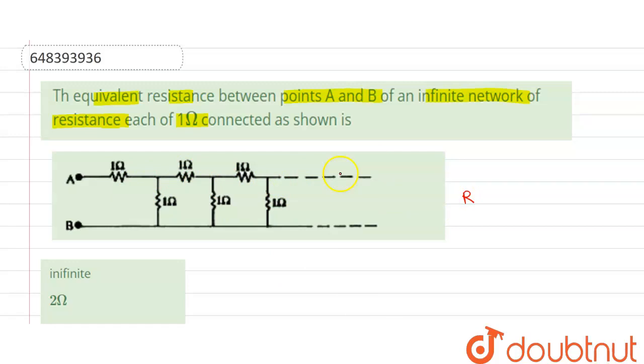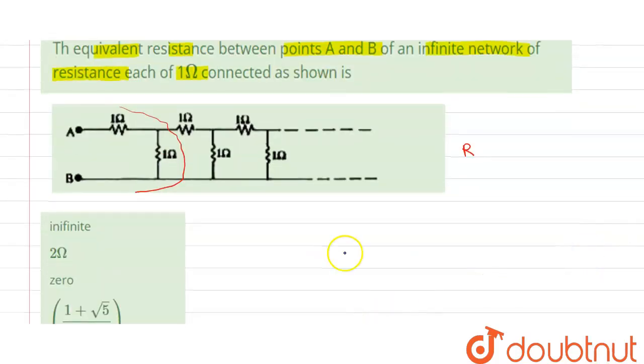As these are infinite resistances, if we remove one part, let's say this part, it is not going to have any effect on the equivalent resistance. So now we can draw this circuit as follows.